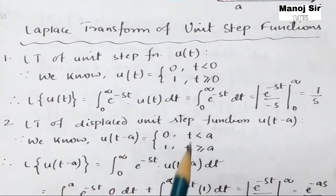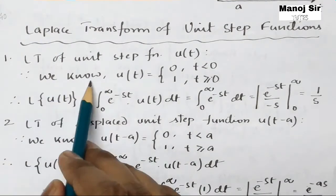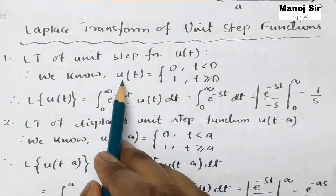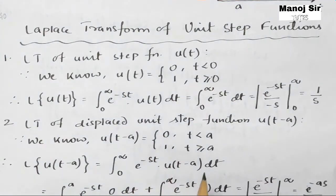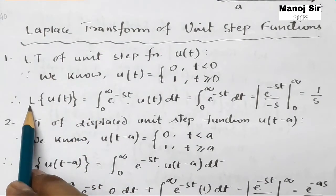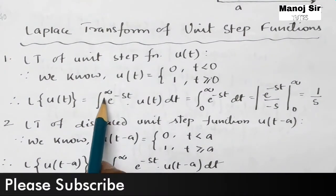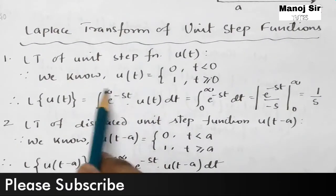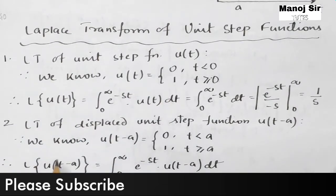First is the Laplace transform of the unit step function u(t). Since we know that u(t) equals 0 when t is less than 0, and u(t) equals 1 when t is greater than or equal to 0. Then the Laplace transform of u(t) equals the integration from 0 to infinity of e to the power minus s t into u(t) dt, by the definition of Laplace transform.